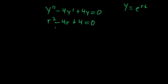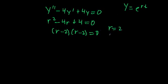We can factor this out and get that r minus 2 times r minus 2 is equal to 0, which means our two roots are just r equals 2 and r equals 2. So that's interesting — instead of getting two distinct roots, we have one root just repeated. This is what we call a repeated root.